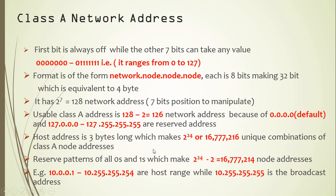An example of a class A network: it ranges from 0 to 127, so 10 is a class A address. In the address 10.x.x.x, '10' is the network part and the remaining octets are the node part. So in a 10.0.0.0 network, the assignable node addresses run from 10.0.0.1 all the way up to 10.255.255.254, while 10.255.255.255 is avoided as it is the broadcast address.